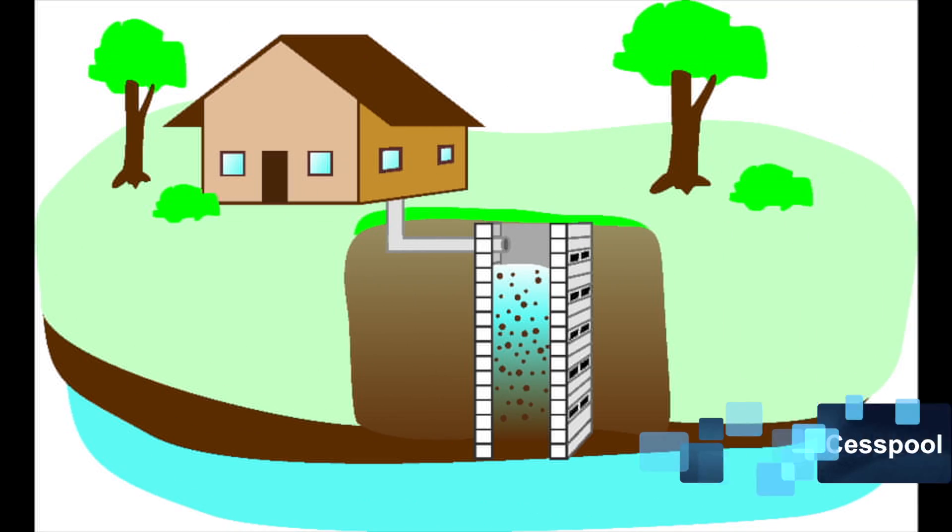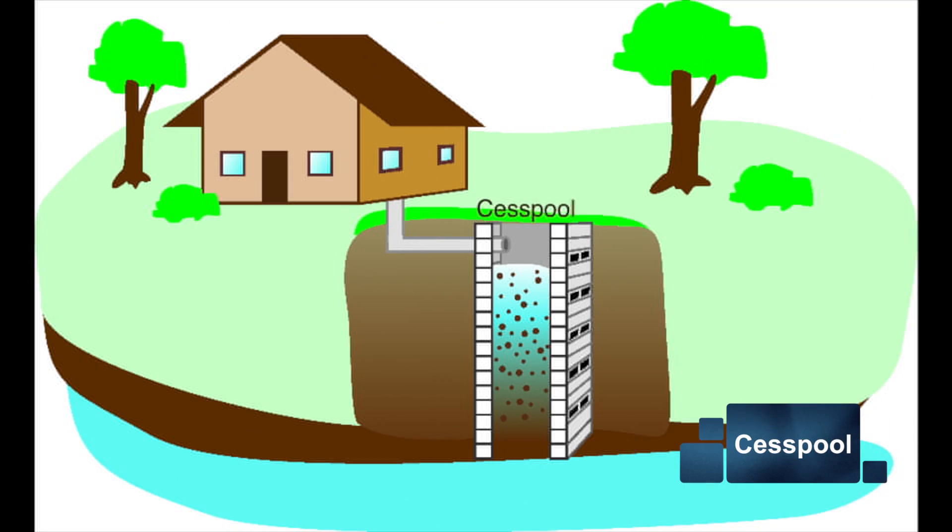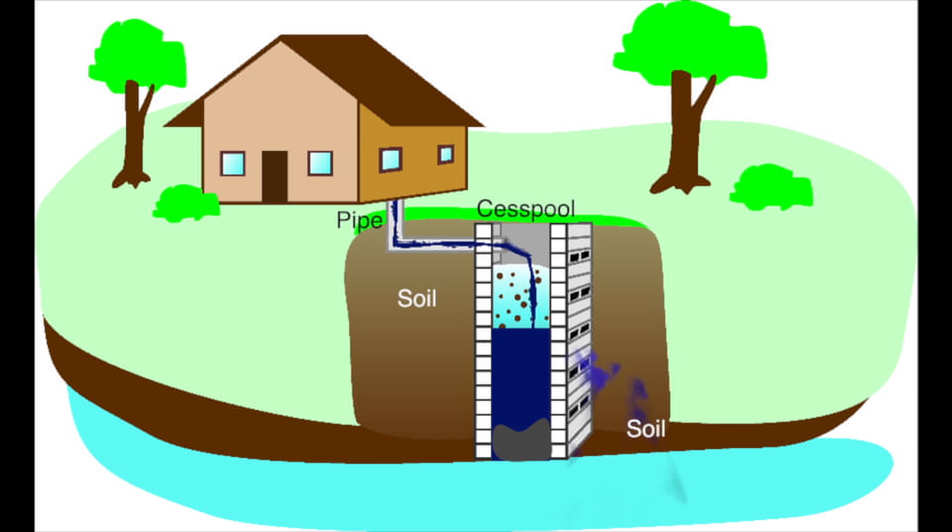The original septic system was called a cesspool. This was a concrete or brick-lined pit where waste from the house collected, the solids settled to the bottom, and wastewater was allowed to escape into the surrounding soil, leaching into the groundwater while still carrying a full load of nitrogen and pollutants. The groundwater would then carry the wastewater into any nearby waterway.